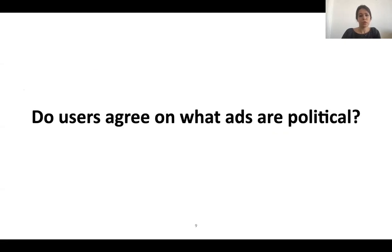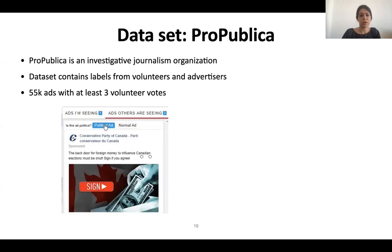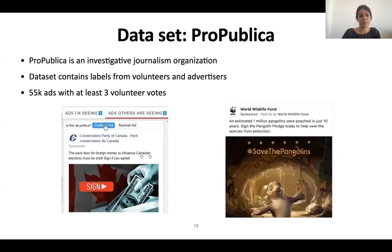Our next question is: do users agree on what ads are political? To study it, we analyze a dataset from ProPublica. ProPublica is an investigative journalism organization that has developed a browser extension collecting the ads people are receiving on Facebook and allows users, wherever the ads they have seen, to label them as political or not. The dataset contains labels from volunteers, users who label their ads, and advertisers. By label from advertisers, we mean paid-for-by disclaimers that Facebook obliged advertisers to put on their political ads. We analyzed 55,000 ads with at least three volunteer votes.